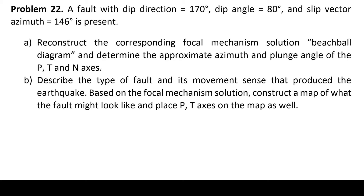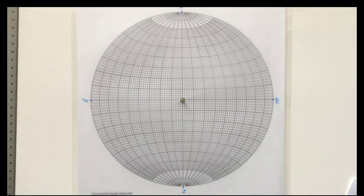In Problem 22, we have a fault dip direction, dip angle, and a slip vector azimuth. These two elements are enough to obtain the focal mechanism on a fault that has experienced movement. We're going to find the focal mechanism and place the P, T, and N axes on it. The fault orientation and slip vector together are sufficient to provide the focal mechanism solution.